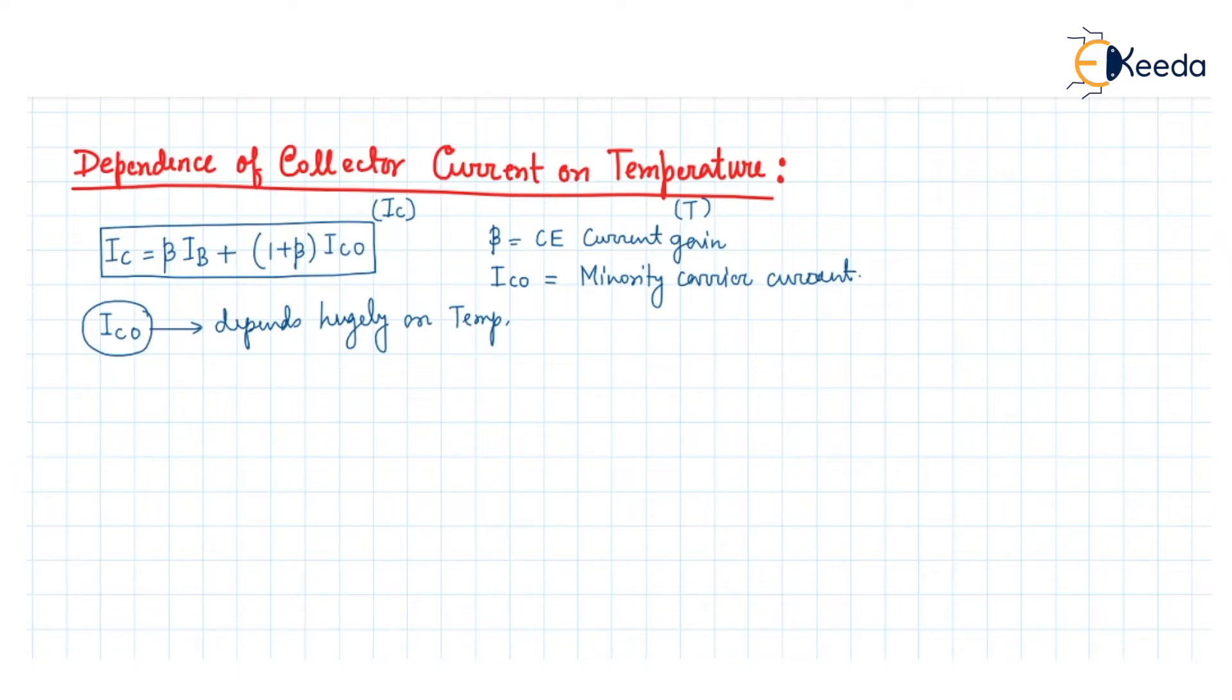If the temperature increases, the minority carrier current ICO will increase. We have already seen that for a 10 degree rise in temperature, the minority carrier current ICO can increase.